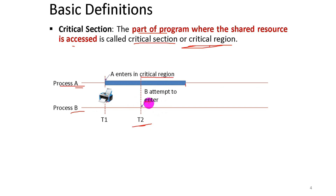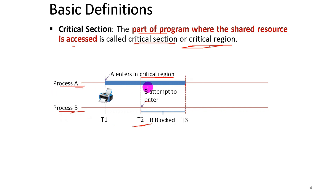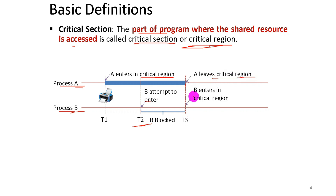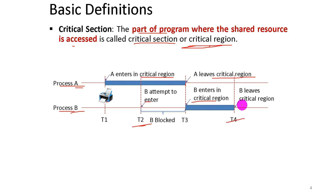At T2, Process B attempts to enter and print its file. Since it is in the critical section and Process A is already using the shared resource, Process B is blocked. At T3, Process A leaves the critical region because it has already completed its task. Then Process B enters the critical region.